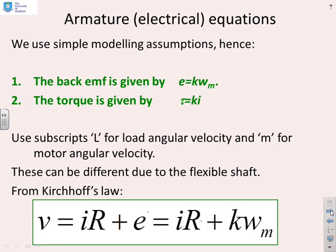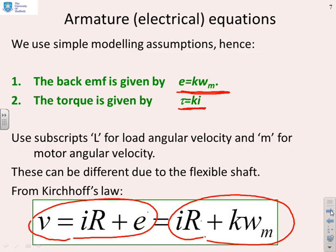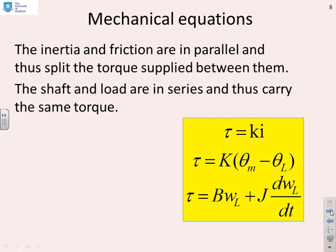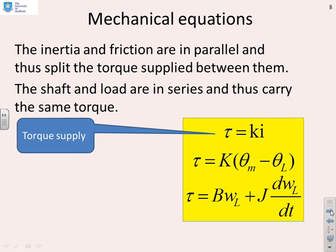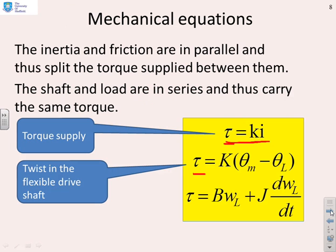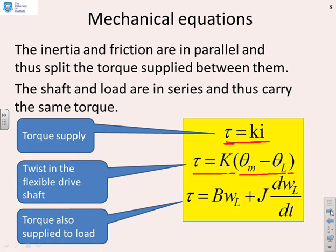Let's remind ourselves of the equations we've got. The back EMF: E equals K·omega_M, where omega_M is the angular velocity of the motor, and the torque is given by K·i. Using Kirchhoff's law: V equals IR plus E, or IR plus K·omega_M. In the mechanical part: torque supplied by the motor equals K·i; twist in the flexible shaft gives torque equals K times (theta_M minus theta_L); and the torque supplied to the load drives friction B·omega_L and accelerates inertia J·d(omega_L)/dt.